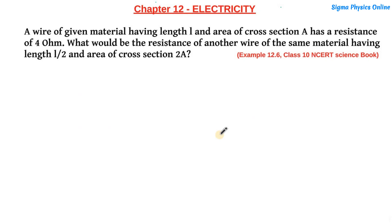Hello students, welcome back. Let's take up another question which is from the class 10 NCERT science textbook. The question is example 12.6 of the electricity chapter. A wire of a given material having length l and area of cross section a has a resistance of 4 ohm. What would be the resistance of another wire of the same material having length l/2 and area of cross section 2a?